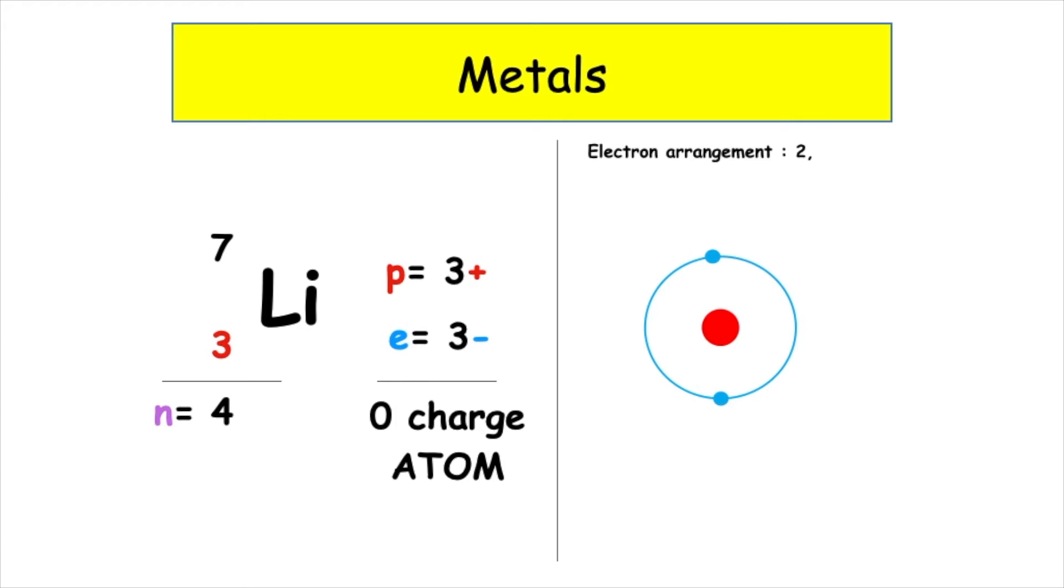It will lose 1, which means that we only have 2 electrons. And if we have 3 positive plus 2 negative, that means that we've got an overall charge of 1 positive, which means we don't have an atom anymore, we have an ion, and we have to remember to put that positive charge on top of the nuclide notation.